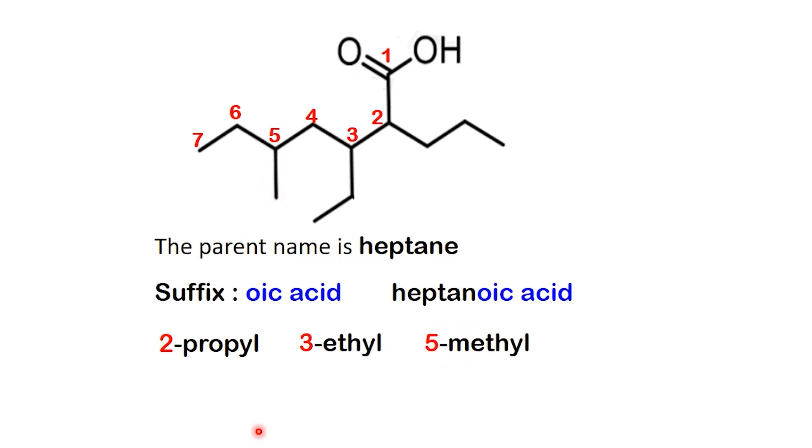Next, we put them in alphabetical order: ethyl, methyl, then propyl. Putting it all together, the correct name is 3-ethyl-5-methyl-2-propylheptanoic acid.